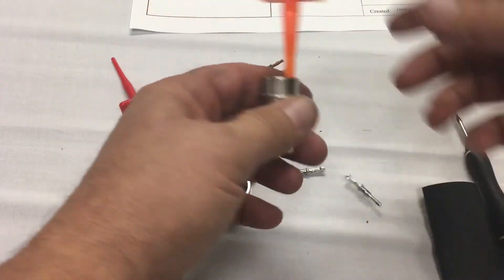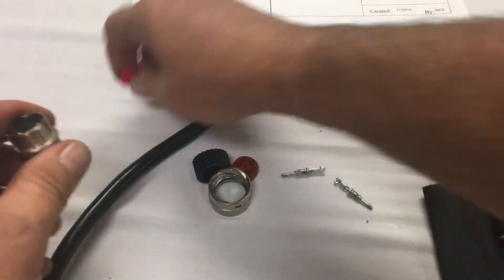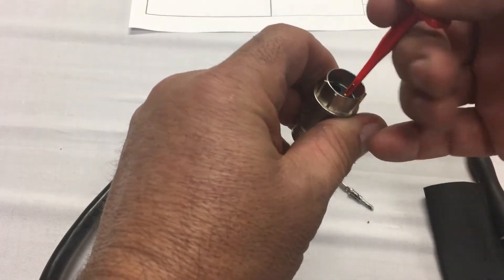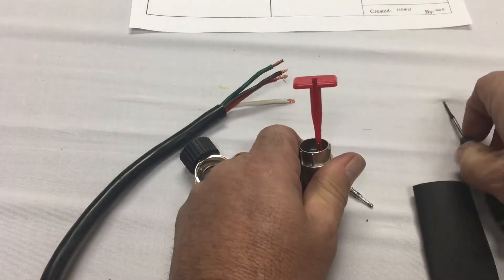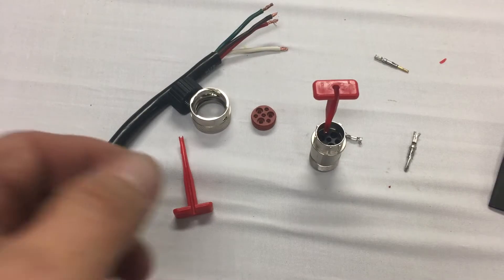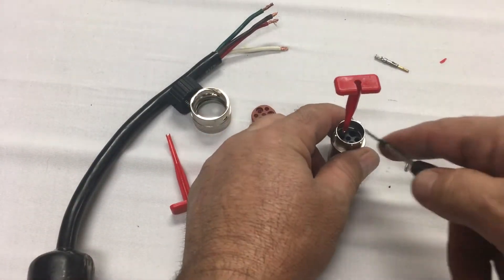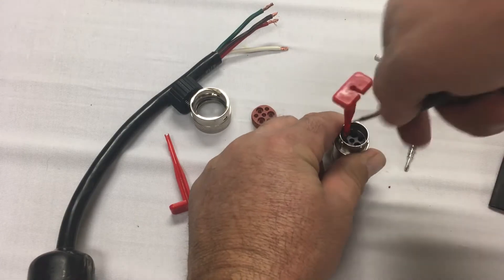And I've got the red tool. This is for the signal pin. Same thing, we push them down until they click. This one was a little more difficult than I thought, but we got it.